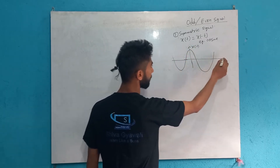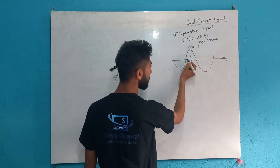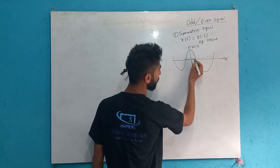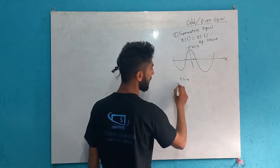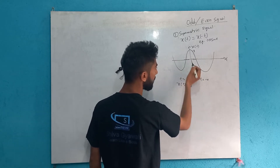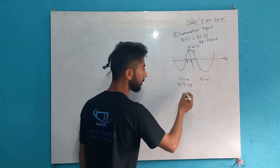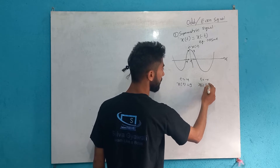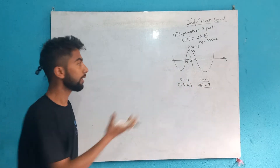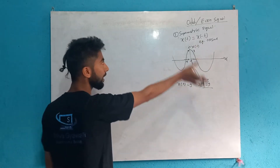This is x(t), and this is t. The value of x(-t) is equal to x(t), which demonstrates the symmetry property of the cosine wave.